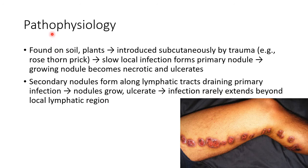Now let us see about the pathophysiology of Sporothrix schenckii. It is found on soil and plants. It is introduced subcutaneously by trauma — for example, a rose thorn prick. This is the reason why it is also called rose gardener's disease. There will be slow local infection which forms a primary nodule.